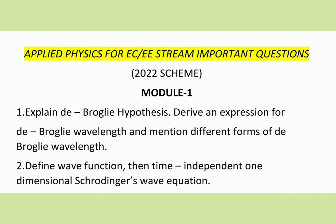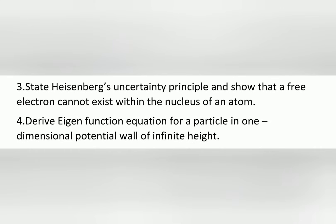The second question is: define wave function, then derive time independent one-dimensional Schrödinger's wave equation. The third question is: state Heisenberg's uncertainty principle and show that a free electron cannot exist within the nucleus of an atom.